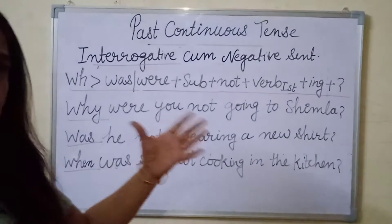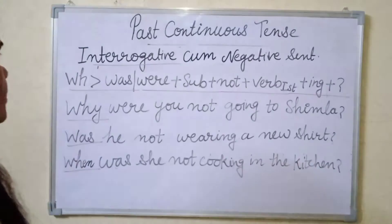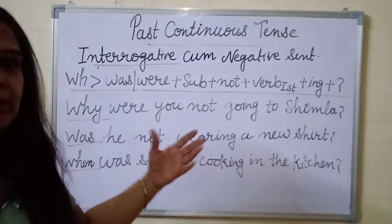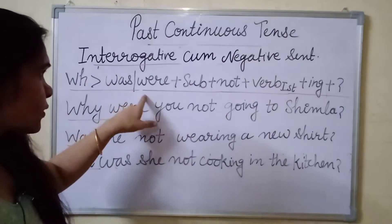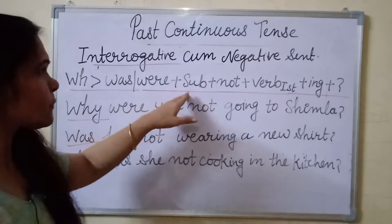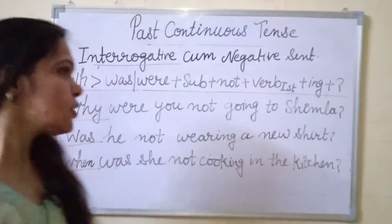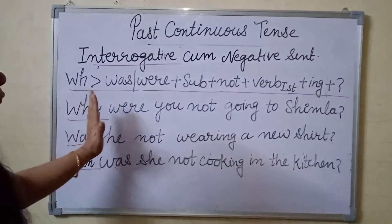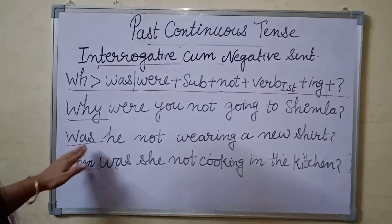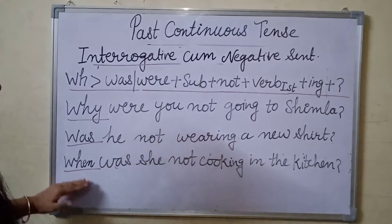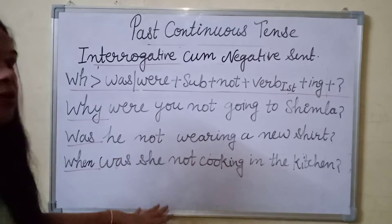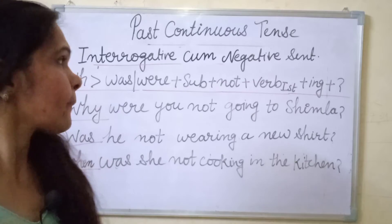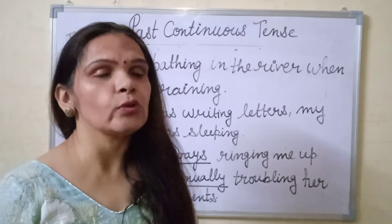Now I will tell you about interrogative-negative sentences — the last sub-part of Past Continuous Tense. The structure is: Wh-family (optional) + was/were + subject + not + verb's first form + ing + object + question mark. For example: Why were you not going to Shimla? Were you not going to Shimla? Was he not wearing a new shirt? When was she not cooking in the kitchen?